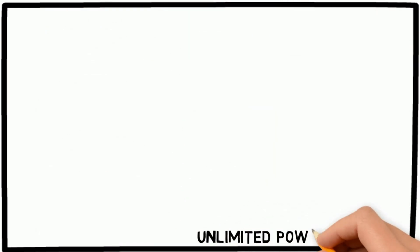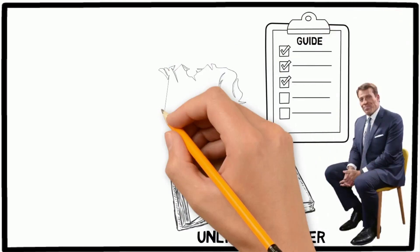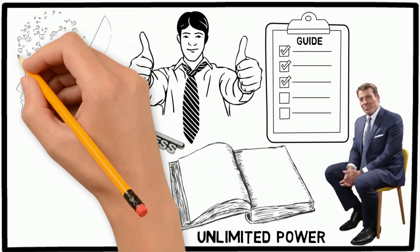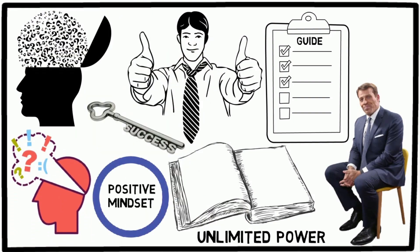Unlimited Power: Self-help guru Tony Robbins lays out a step-by-step guide to achieving success in all areas of life. Robbins believes that the key to success is harnessing the power of the mind. He teaches readers how to overcome negative thoughts and develop a positive mindset.